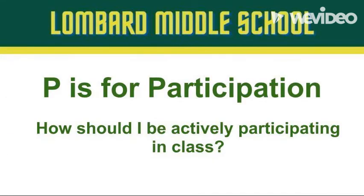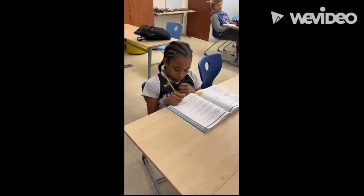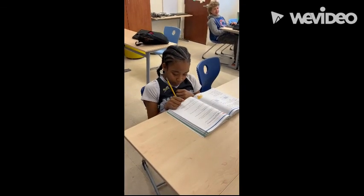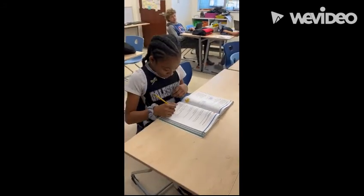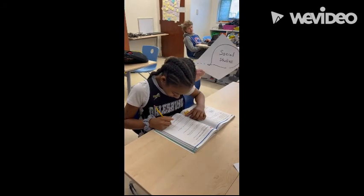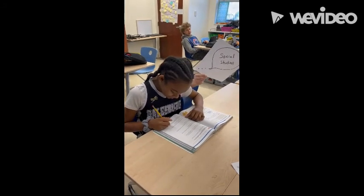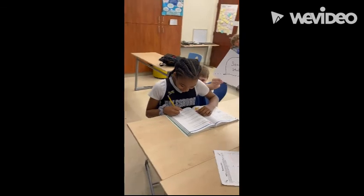P is for participation. How should I be actively participating? Like SLANT. SLANT is: sit up, lean in, activate your thinking, notes and nod, and track the teacher. Here's Mimi — alright, Mimi, show your slant. Sit up. Lean in. Activate your thinking. Notes and nods. And track the teacher.